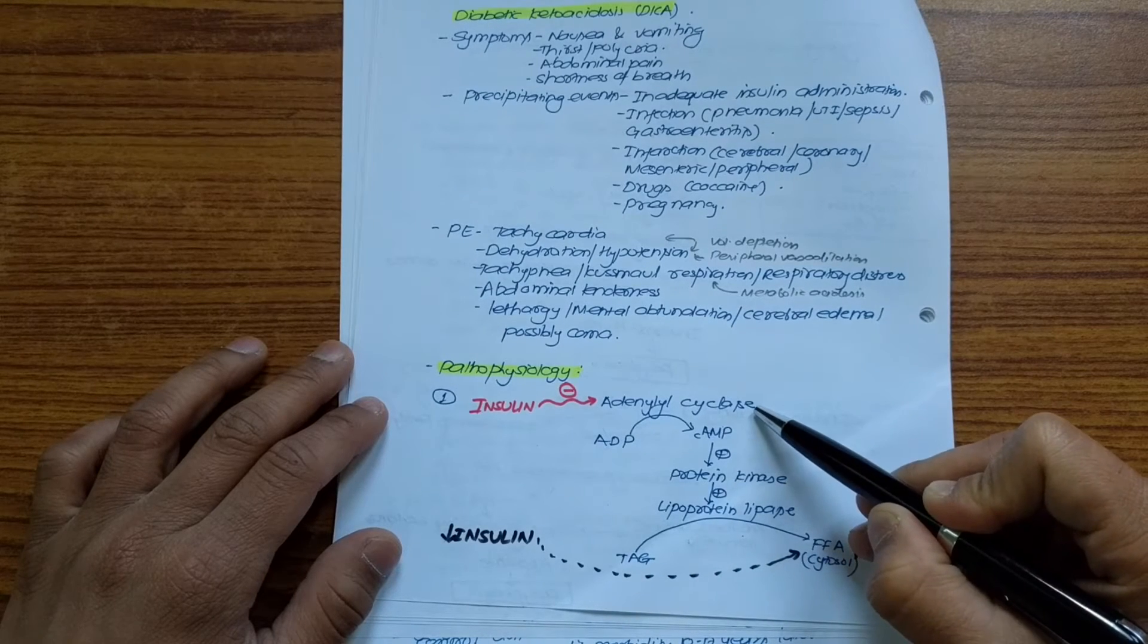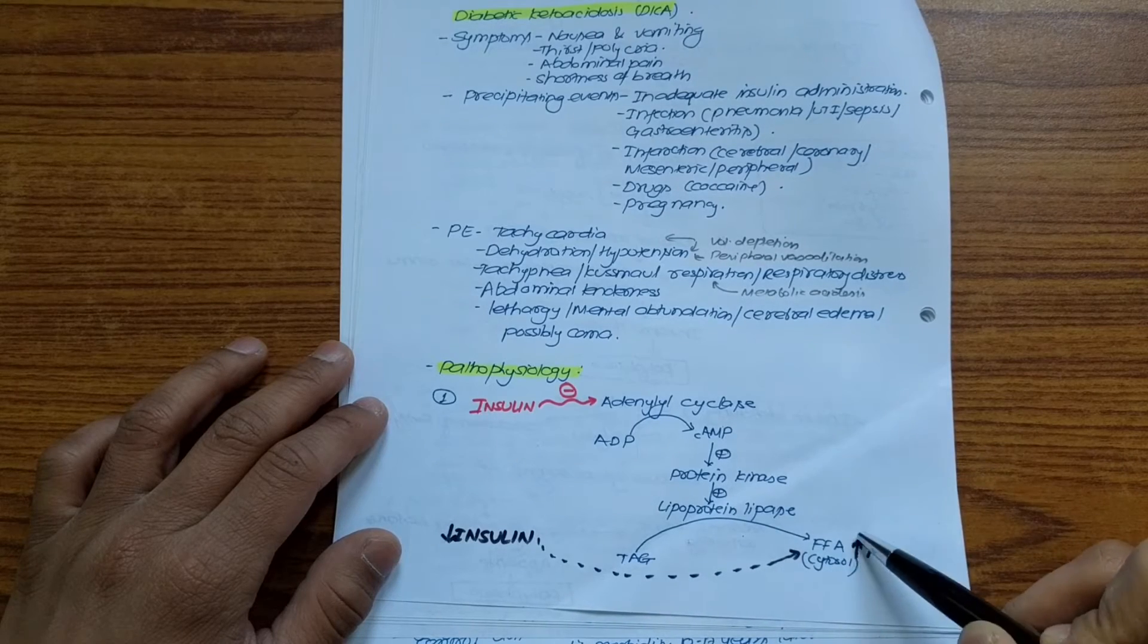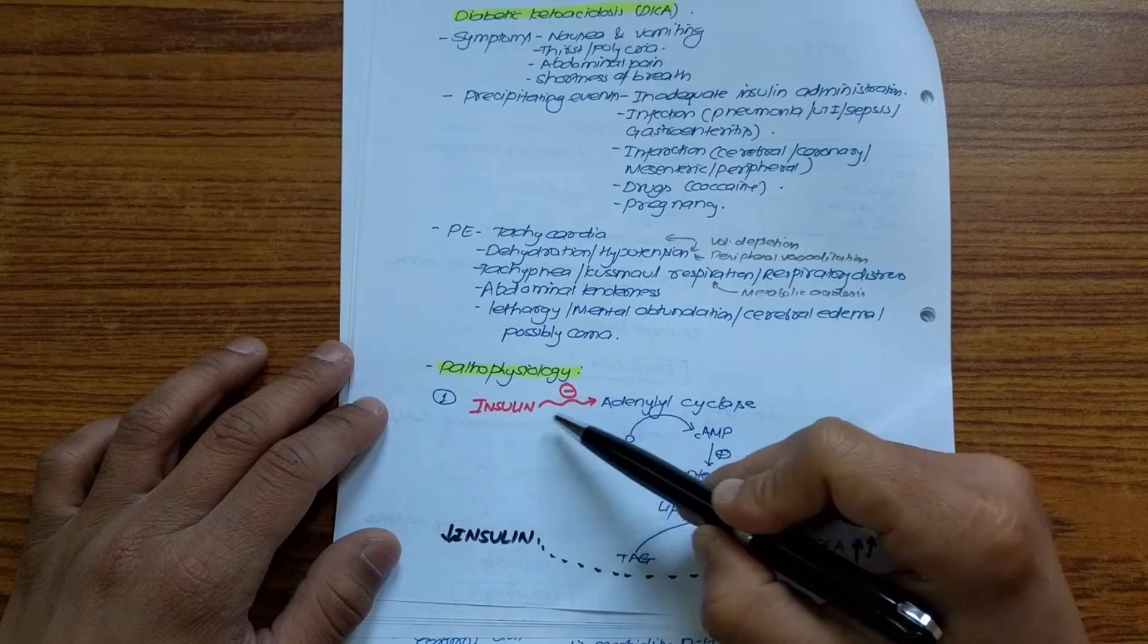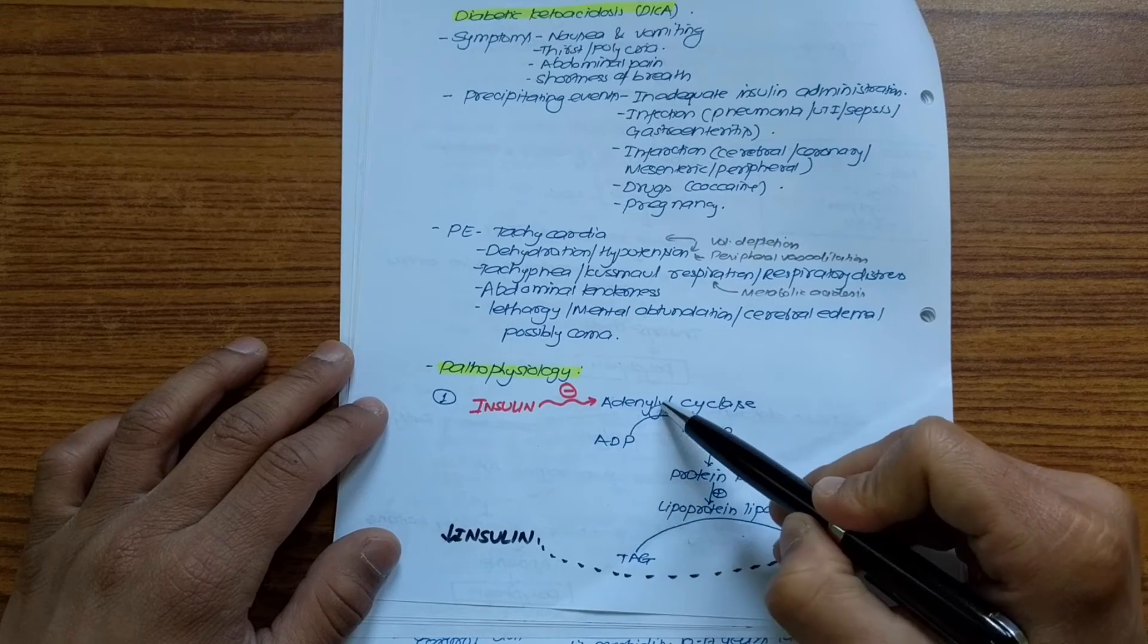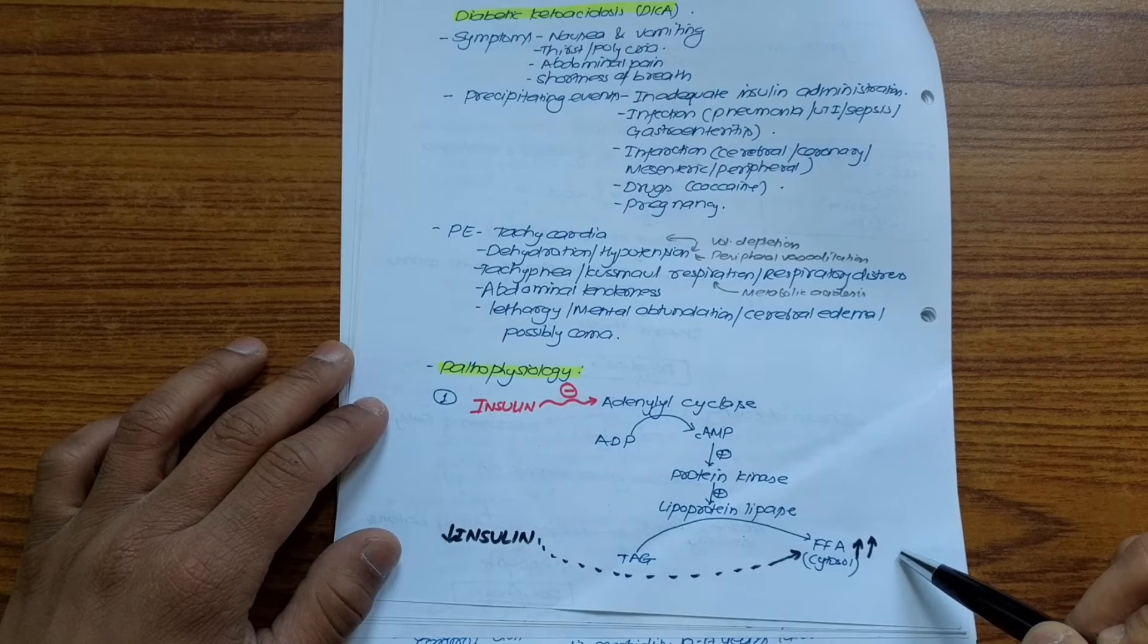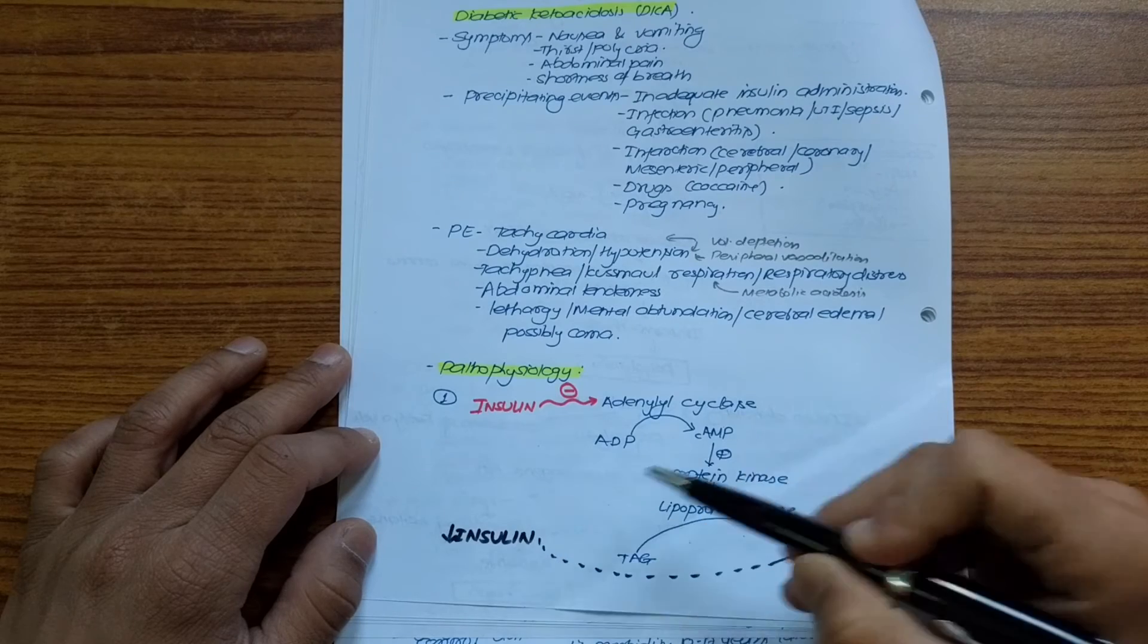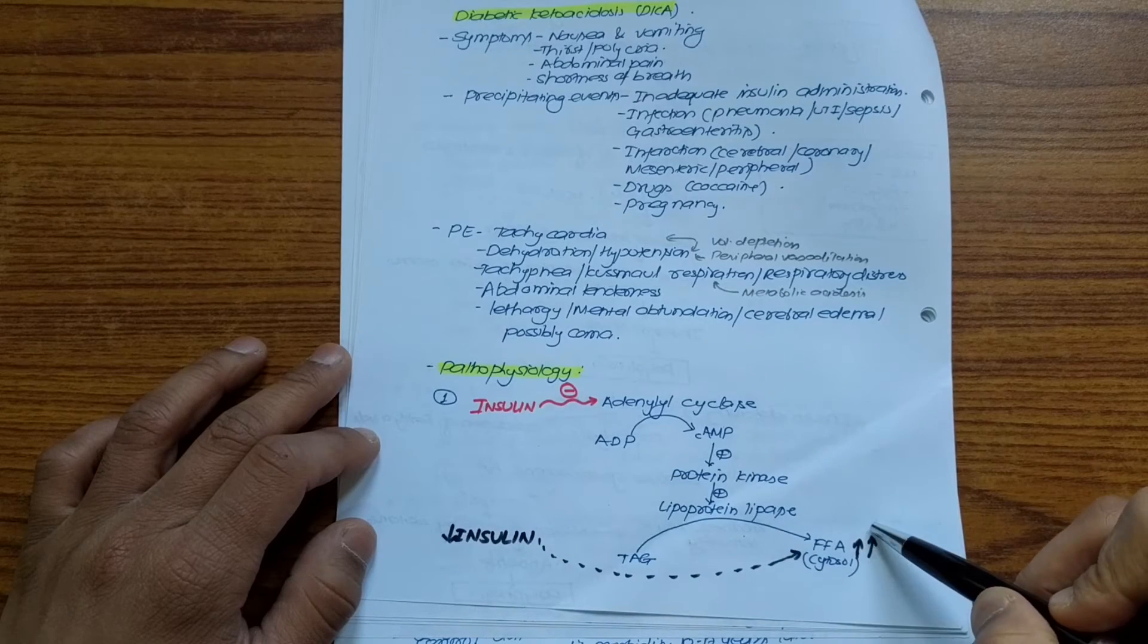Since this enzyme is in cytosol, in presence of this enzyme free fatty acid will increase in the cytosol. The function of insulin is to inhibit adenylyl cyclase, and this will in turn decrease the amount of free fatty acid in the cytosol. But in case of type 1 diabetes mellitus, insulin will be low and the amount of free fatty acid in the cytosol will increase.